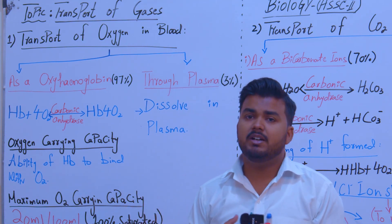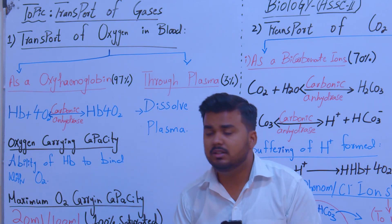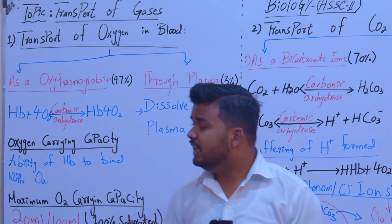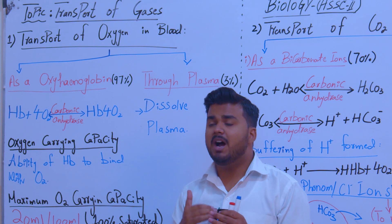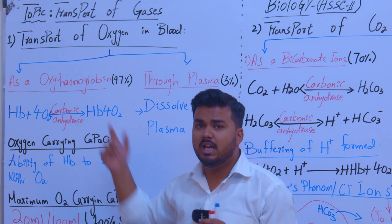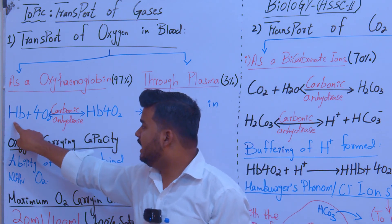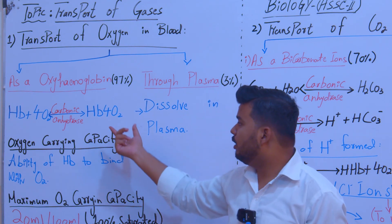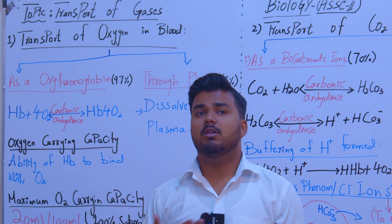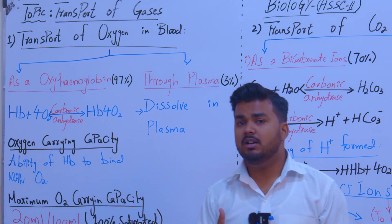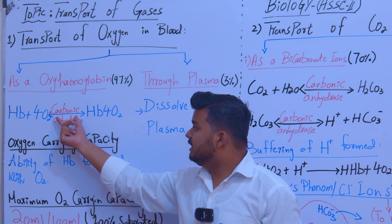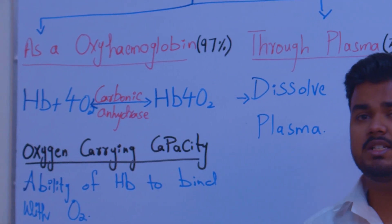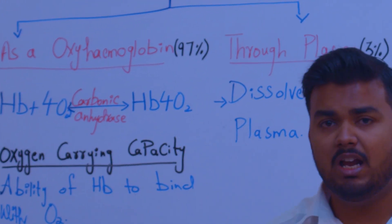Hemoglobin is basically a respiratory pigment, which we will also study in detail. Hemoglobin is present in red blood cells. What hemoglobin does is bind oxygen to form a compound known as oxyhemoglobin. One hemoglobin molecule binds four oxygen molecules. This reaction uses an enzyme known as carbonic anhydrase, and it is a reversible reaction.